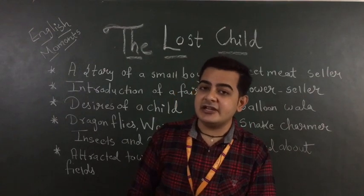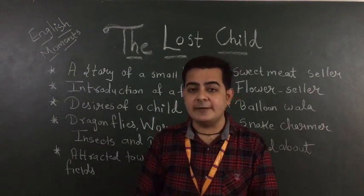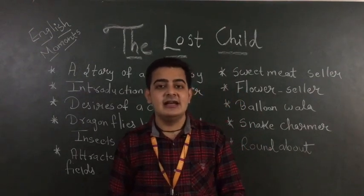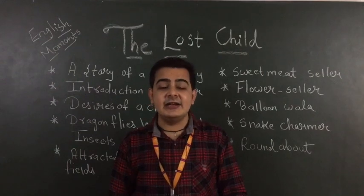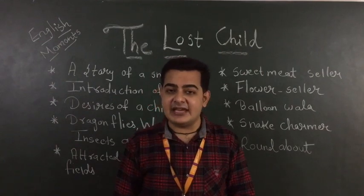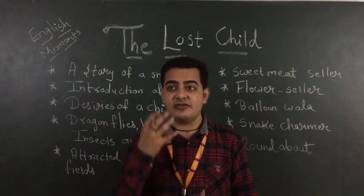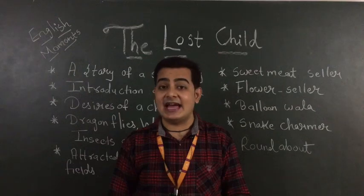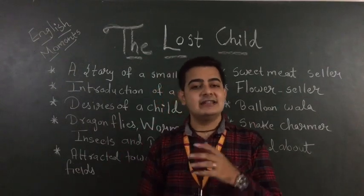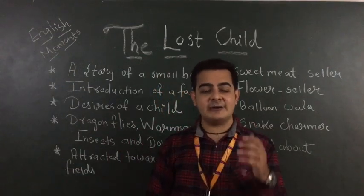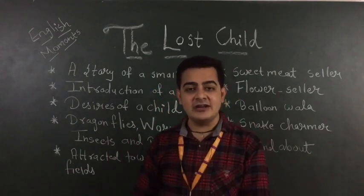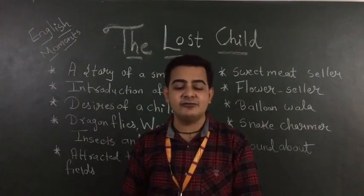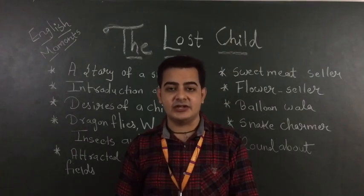What type of expression did his father show? He showed a brutal, tyrant-like expression — in a cruel way, with red eyes. He showed that his father was angry, and denied him from buying any toy.